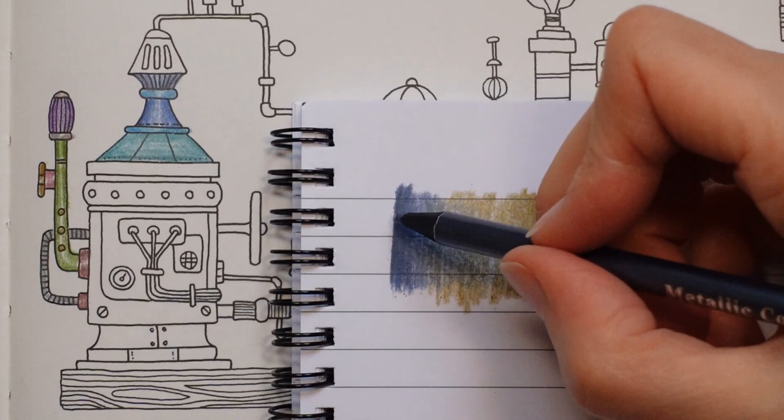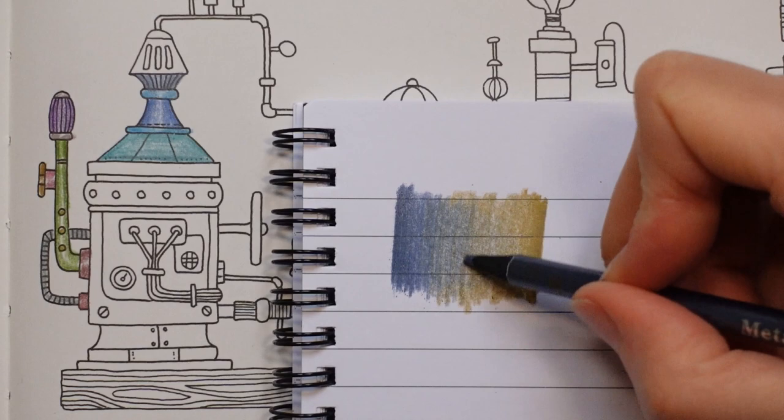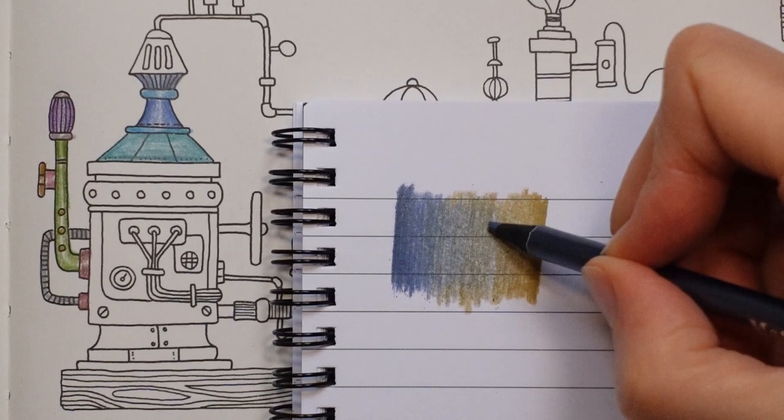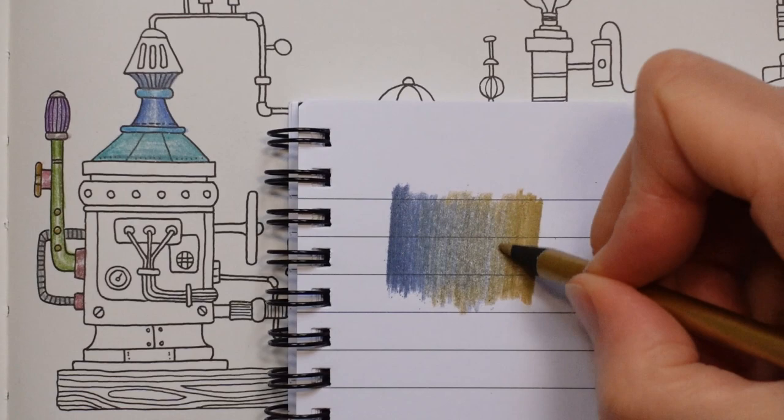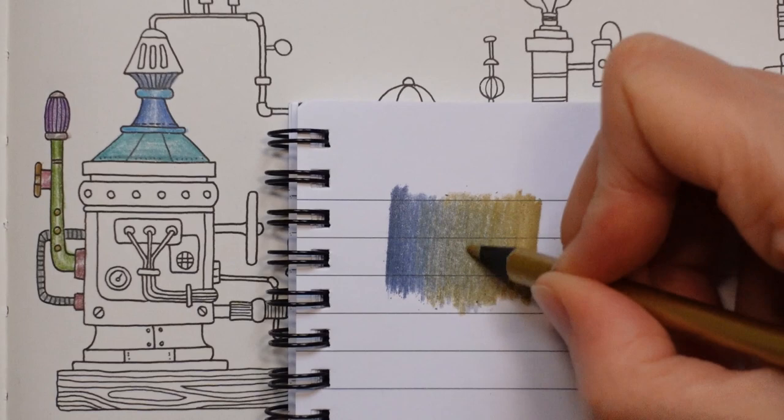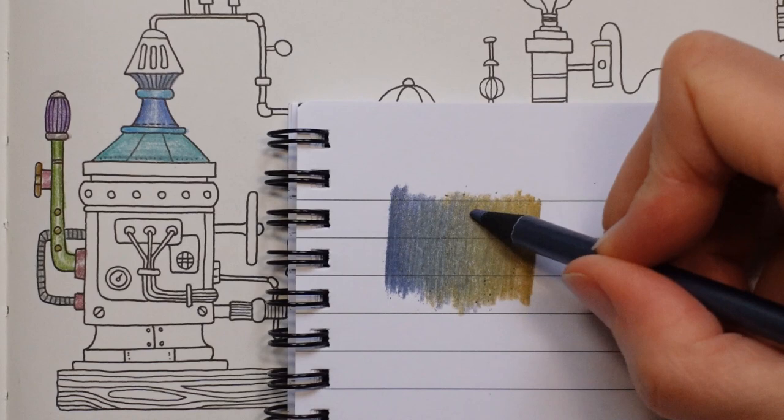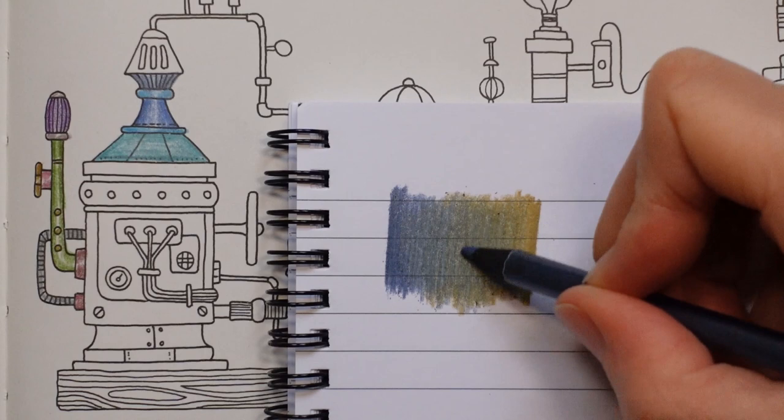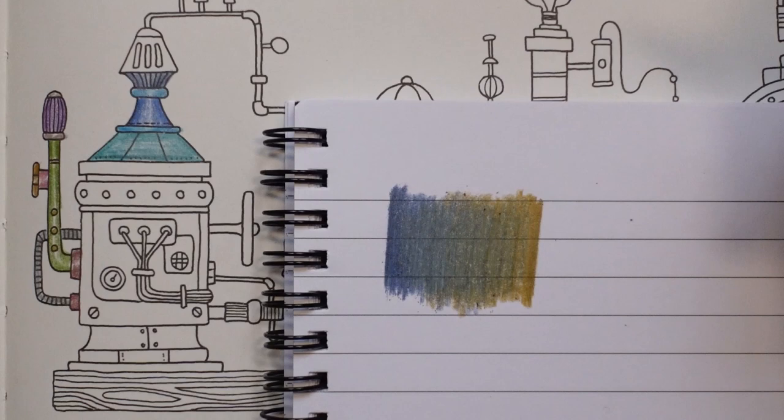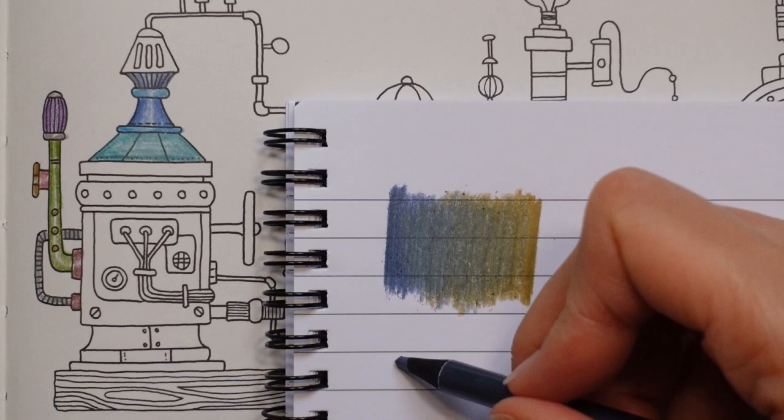And then blend it across to about there. Now, I don't know how well they're going to mix together. I thought we might get a green as we're mixing a gold and a blue. But I think this gold is more of a brown tone. So we're not getting a green. But it's still mixing together. I'm just using the technique that I would use to mix Polychromos. Because it's the only blending technique that I know. There we go. It is mixing. But it's just not making a very nice color.